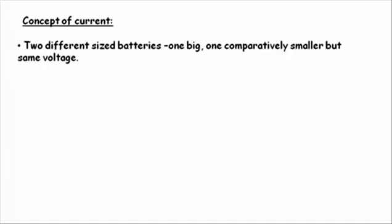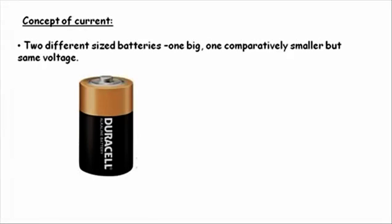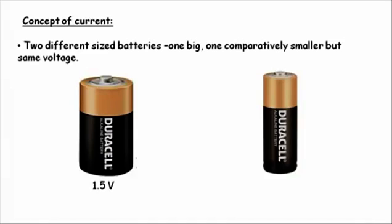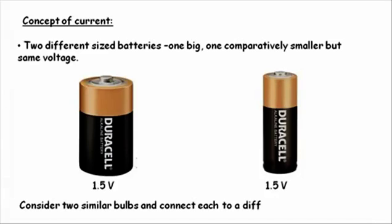Consider two batteries of voltage 1.5V each but of different sizes. One battery is comparatively large in size. Now taking two similar bulbs and connecting them to each battery individually, what can we observe? Since there is a source of voltage—the battery—and the load to conduct, the bulbs start glowing.